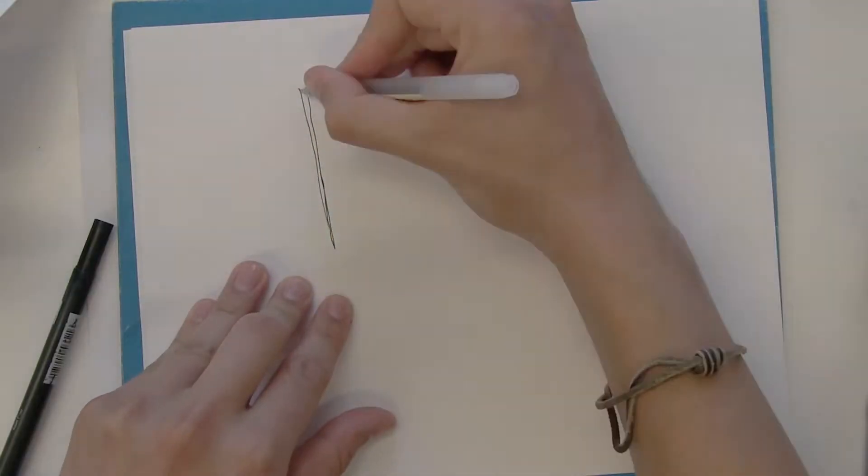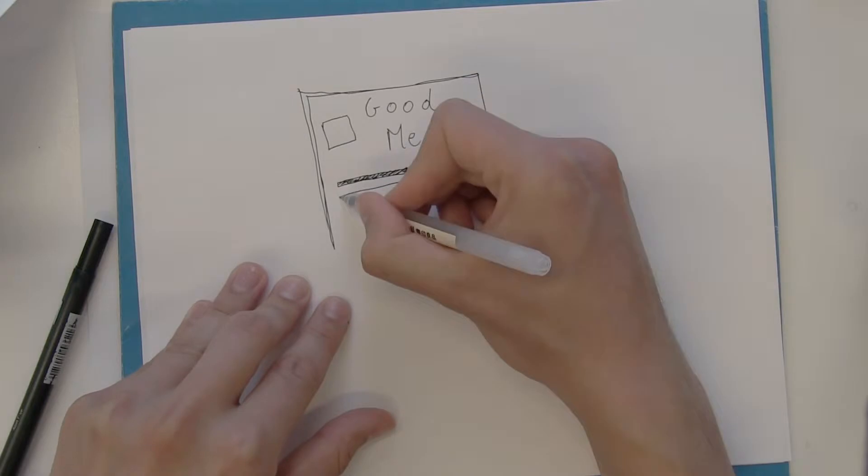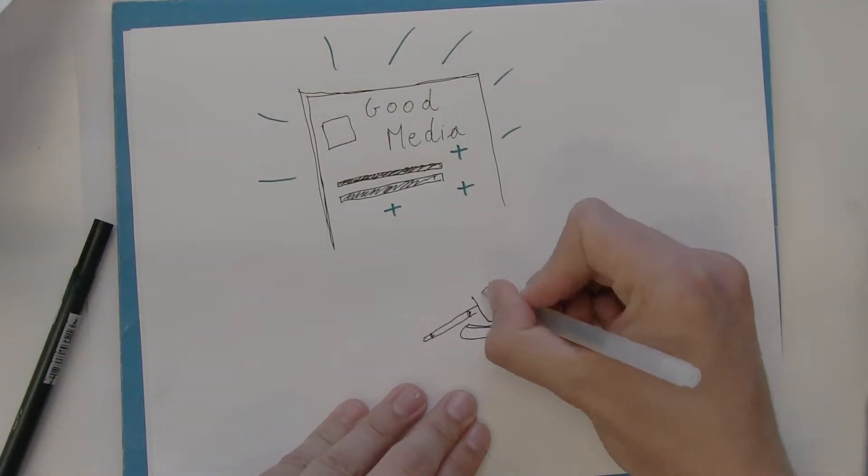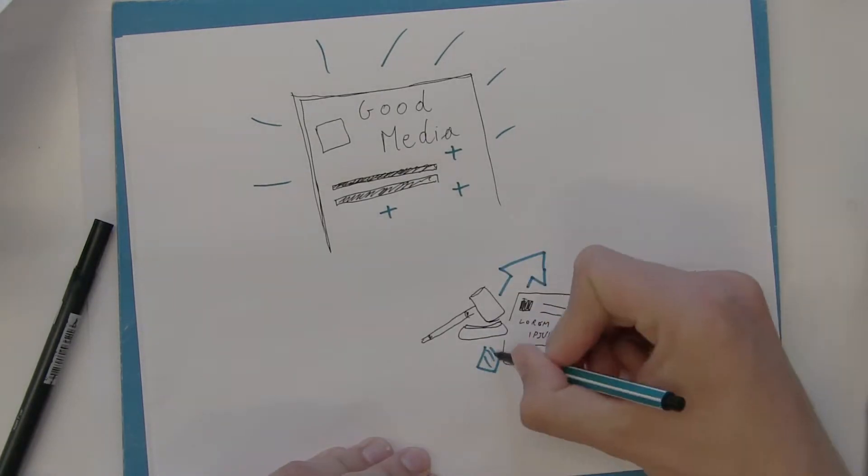In theory, governments should promote news literacy and strong professional journalism in their society. And if they do this, the level of democracy and the quality of news would both be positively influenced.